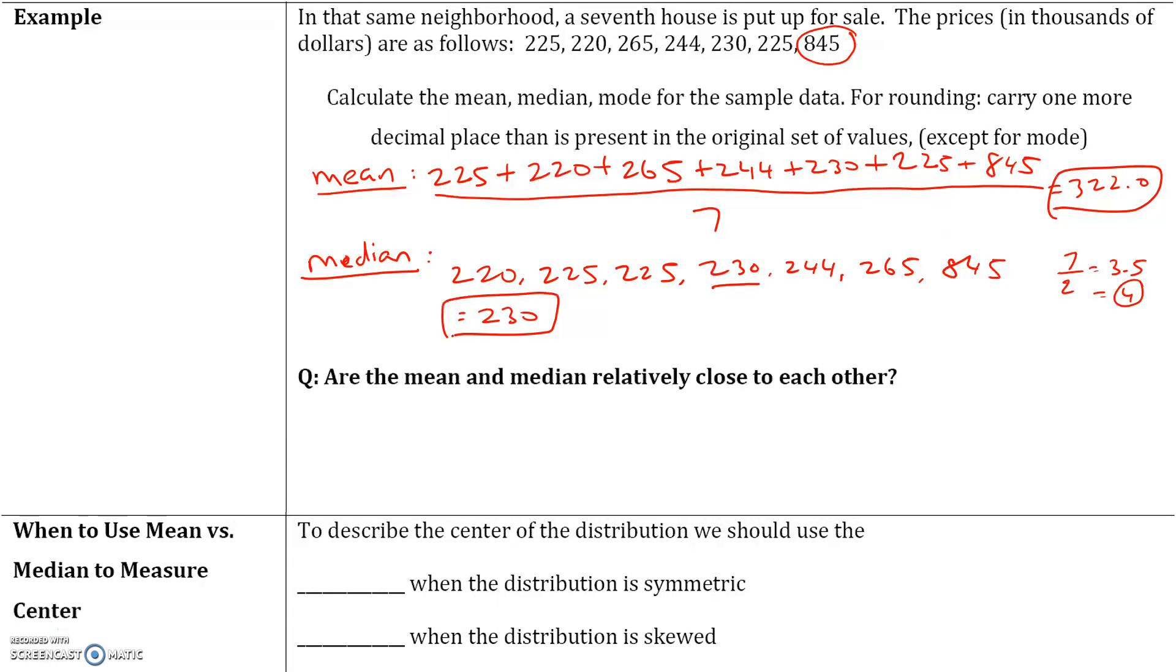Now in this case, are the mean and the median relatively close to each other? The mode we're not going to worry about because it's the same, 225. Are the mean and the median relatively close to each other? This time, they are not.